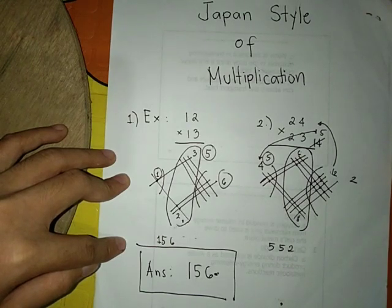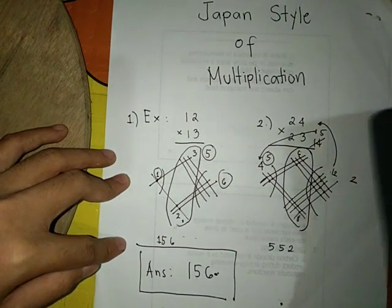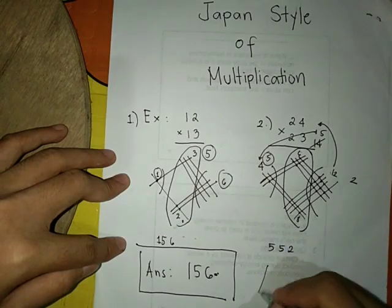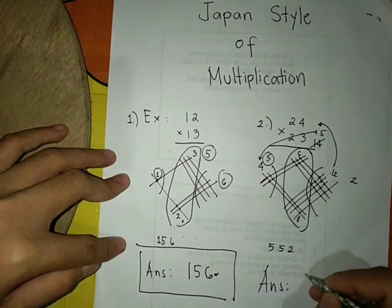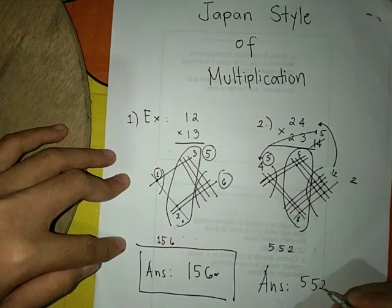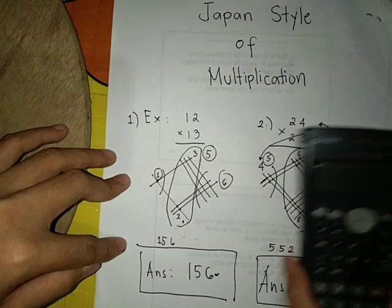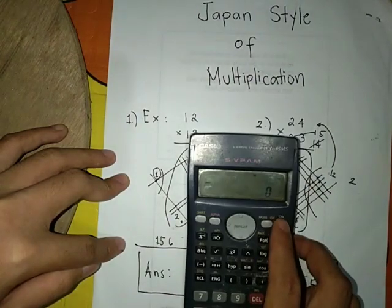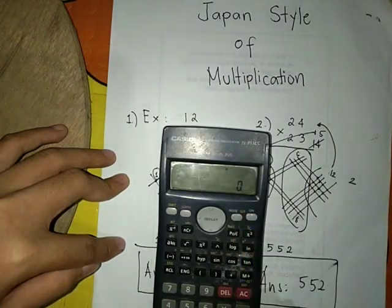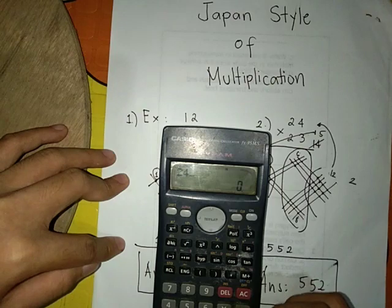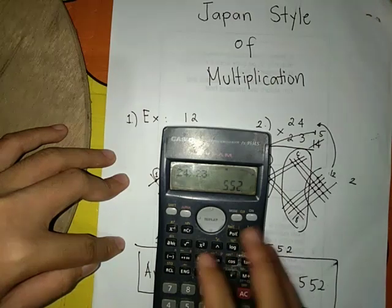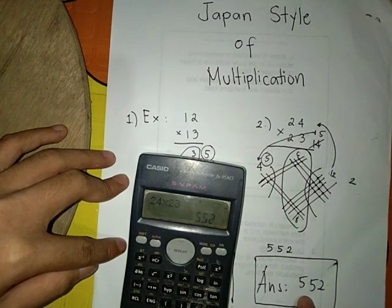Check using calculator. Answer: 552. 24 times 23. Yeah, it has the same answer.